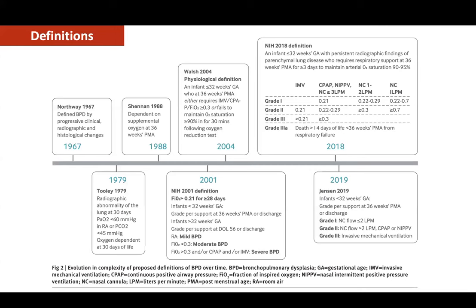Grade 3A applied to babies who died on the ventilator after two weeks but before 36 weeks due to respiratory failure. Jensen then published a large cohort study evaluating what could actually predict long-term outcome, and based on that study the current definition evolved into grade one, two, and three based on the baby's respiratory support at 36 weeks: grade one is low-flow oxygen, grade two is non-invasive respiratory support, and grade three is mechanical ventilation. This mode-of-support grading is considered an important predictor of long-term pulmonary and neuromorbidities.